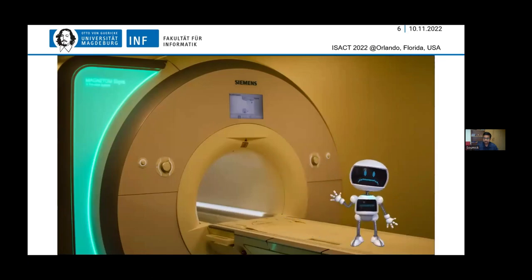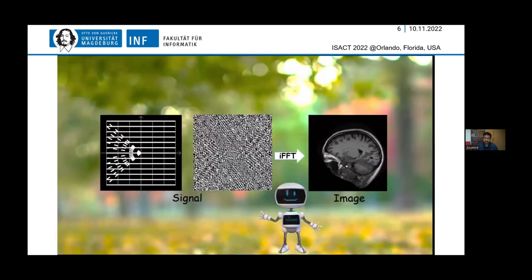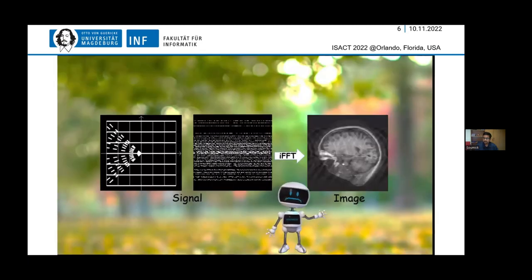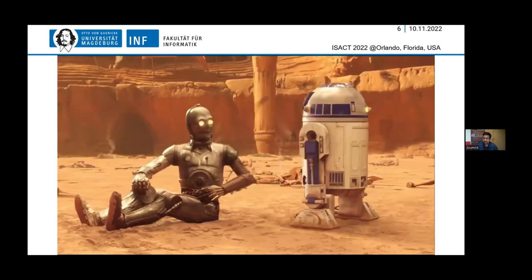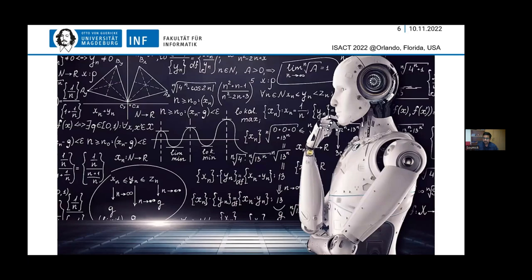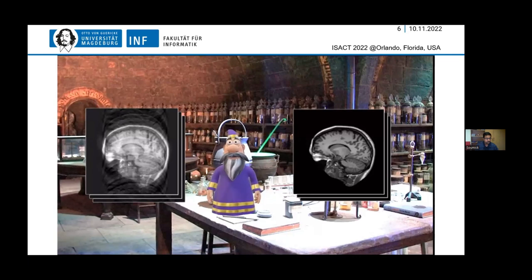But there is one problem: MRI is really slow, making it difficult to use during surgeries. We can make it faster if we ignore parts of the data, but that will make the images lose quality. In our research, we are trying to harness the power of machine learning to solve this problem — teaching our algorithm how to improve poor quality images without compromising the speed of image acquisition.